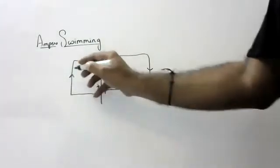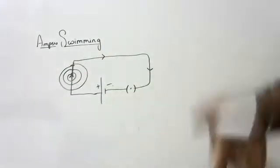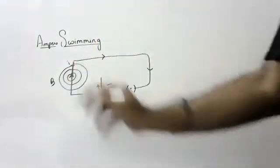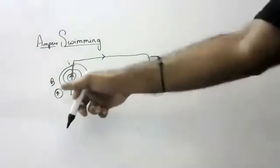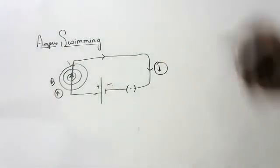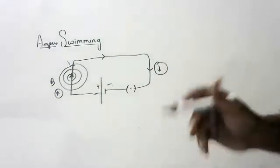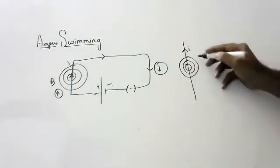Around the current-carrying conductor there is a magnetic field — but how to know? If you want to know whether a magnetic field is present around a current-carrying conductor, bring a compass and put it near the wire — below the wire or above the wire. It will show deflection, indicating that around the current-carrying conductor, magnetic field is present.